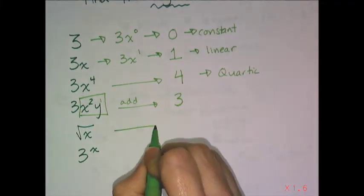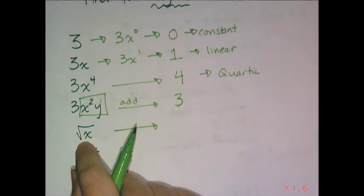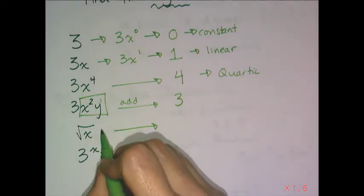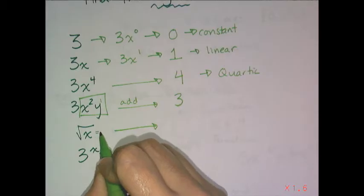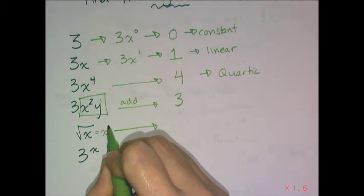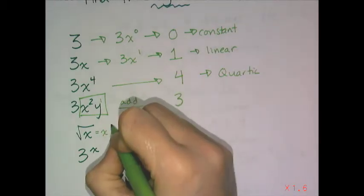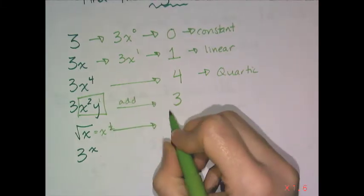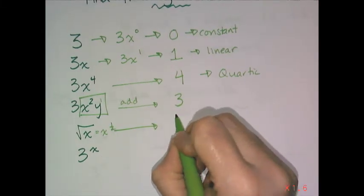Now this one is also preparation for Algebra 2 because this radical means that I have an exponent of a fraction, in this case it's a half, and so the square root of x has a degree of 1 half.